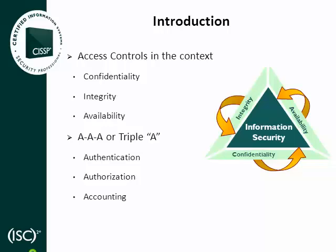There are two parts to integrity in computer systems: data integrity and system integrity. Data integrity means that data in the system accurately represents the information intended, that it is complete, and that it accurately reflects similar data in external systems. System integrity means that the system performs as intended without exception. Both are achieved, in part, by ensuring that unauthorized changes are prevented. Access Controls also serve to prevent intruders from obtaining unauthorized access, which would enable them to change data or systems.